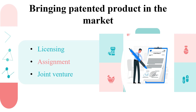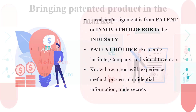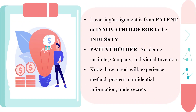All three modes may be explored by the patent holder as well as third parties to find out the most effective way of working together. In most cases, licensing or assignment of the patent takes place from the patent holder to the industry because they both have good synergy — the patent holder possesses innovation while the industry possesses business skills. The patent holder may be an academic institution, a company, or an individual inventor. In addition to the patent, know-how, goodwill, experience, methodology, process, confidential information, and trade secrets are also often transferred to enable the industry partner to exploit the patented technology in the best possible manner.